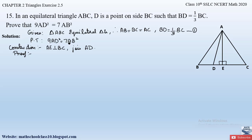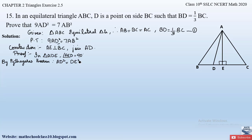Since we have to prove 9 AD square equals 7 AB square, the triangle formed by side AD is right angle triangle ADE. So let us apply the Pythagoras theorem in triangle ADE. Since angle AED is 90 degrees, and AD is the hypotenuse — the side opposite the 90 degree angle — we get: AD square is equal to DE square plus AE square. Let this be equation 1.